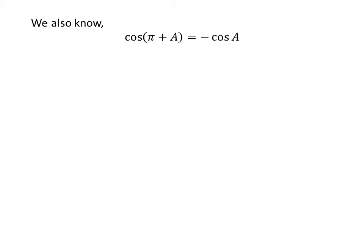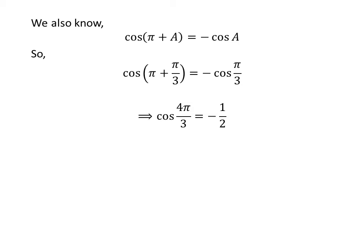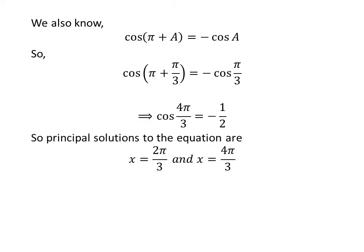We also know the trigonometric identity cosine of pi plus a is equal to minus cosine of a. Applying this identity as before, we get cosine of four times pi upon three is equal to minus half. So the principal solutions to the equation cosine of x equals minus half are two pi upon three and four pi upon three.